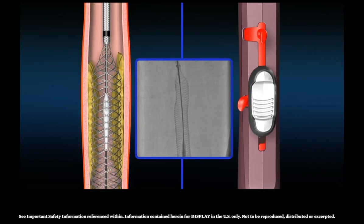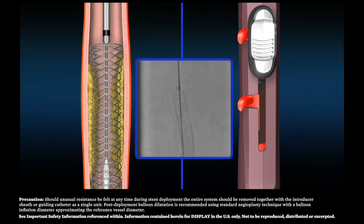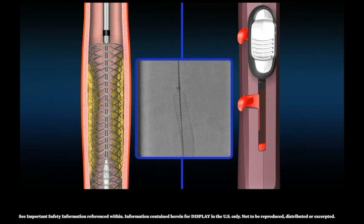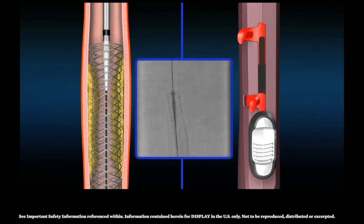To release the Supera implant, rotate the deployment lock to the unlocked position. Slowly advance the thumb slide to complete deployment. Following confirmed implantation of the Supera stent, retract the thumb slide in a single motion to the starting position on the handle and rotate the system lock and deployment lock into the locked position in line with the thumb slide.